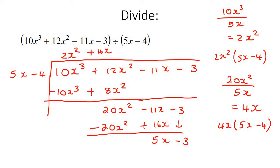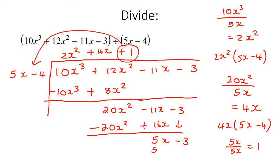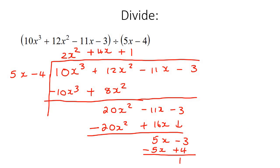We start the process again. Here we have 5x and the highest power is 5x. We divide: 5x divided by 5x is 1. So we write plus 1 at the top. Then we take that 1 and multiply it with 5x minus 4, which is just 5x take away 4. Switch the signs — negative and positive — and we are left with 1. That is the remainder. So the final answer is 2x squared plus 4x plus 1, and then plus 1 over 5x minus 4.